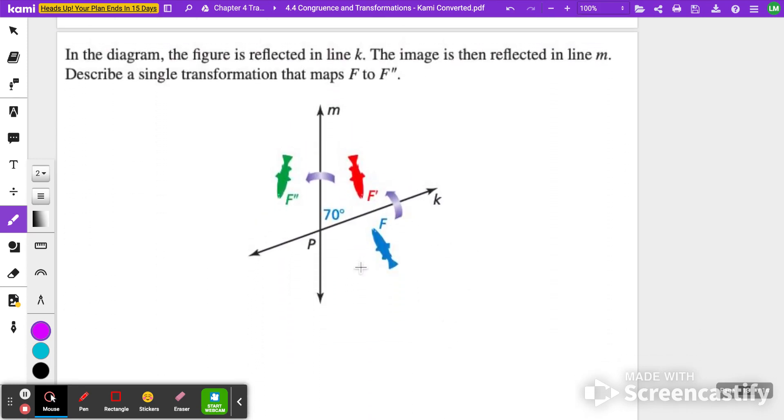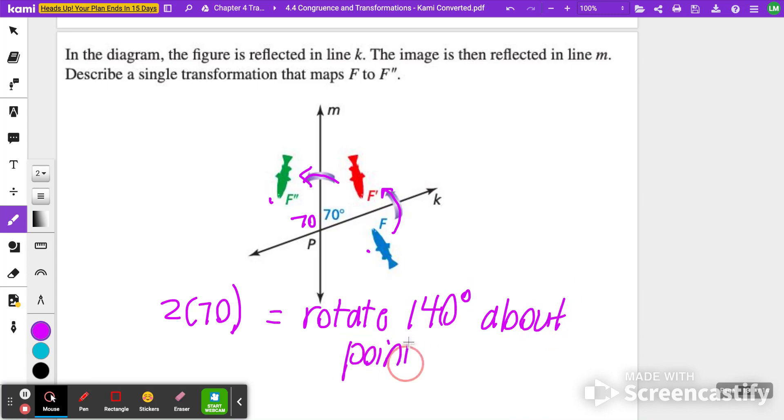So we're going to try that here in this one. In the diagram, the figure is reflected in line K, then it's reflected in line M. So again, describe a single transformation that maps F to F double prime. So again, because I'm rotating it or reflecting it around K and then M, I'm essentially adding 70 degree rotation plus another 70 degree rotation here or doing two times 70. So this is rotate 140 degrees about point P.